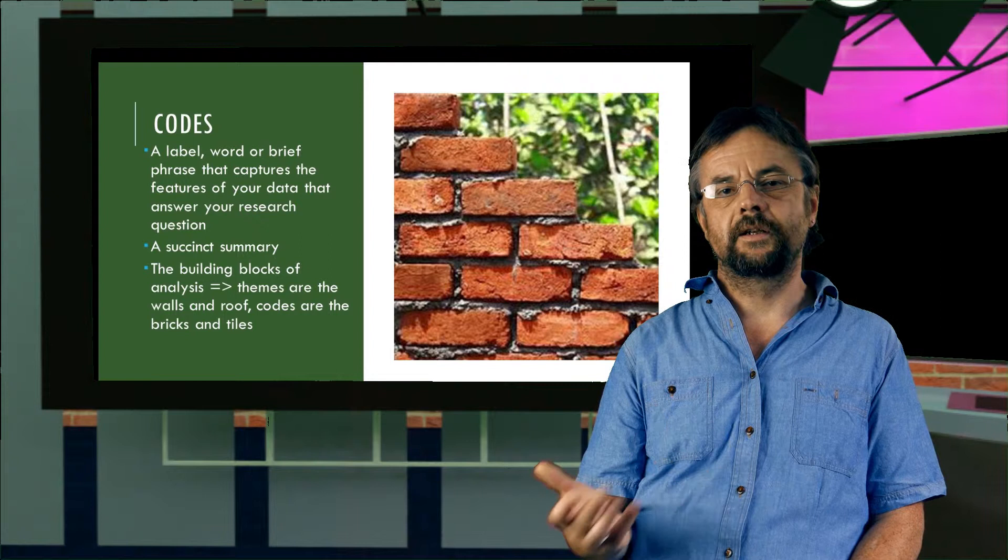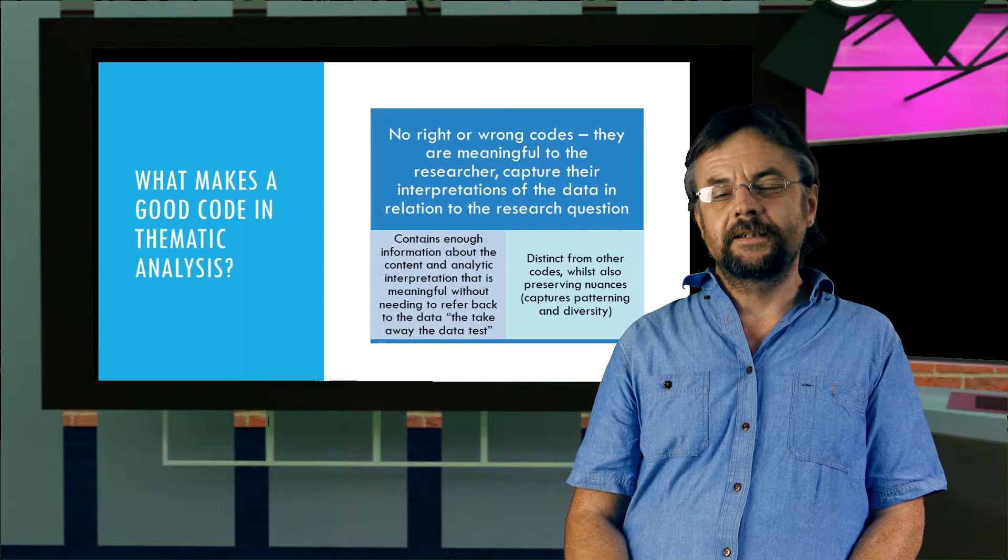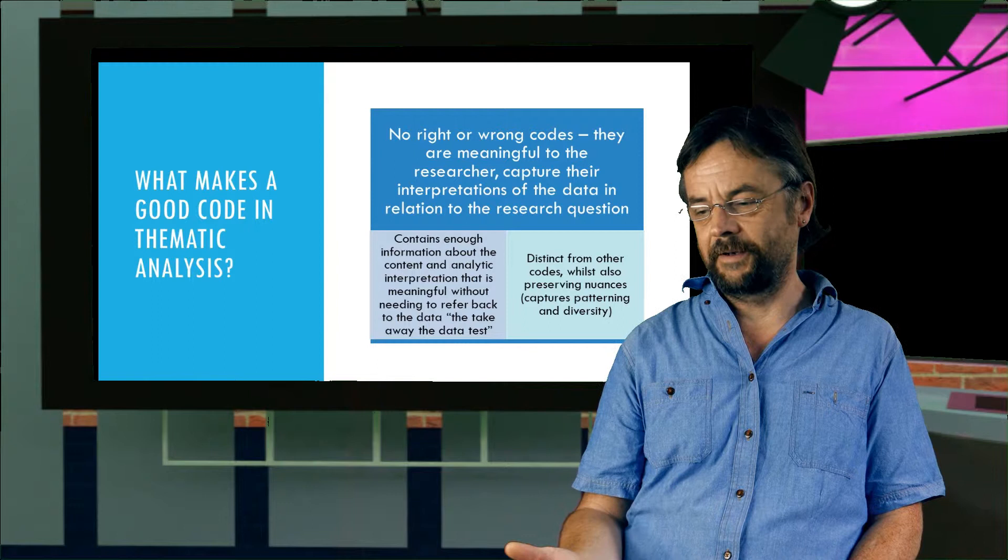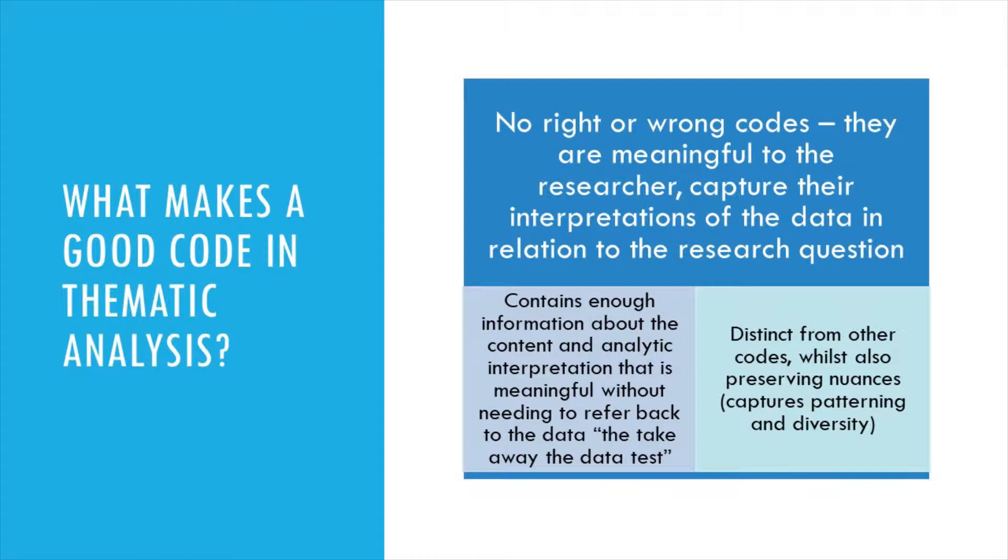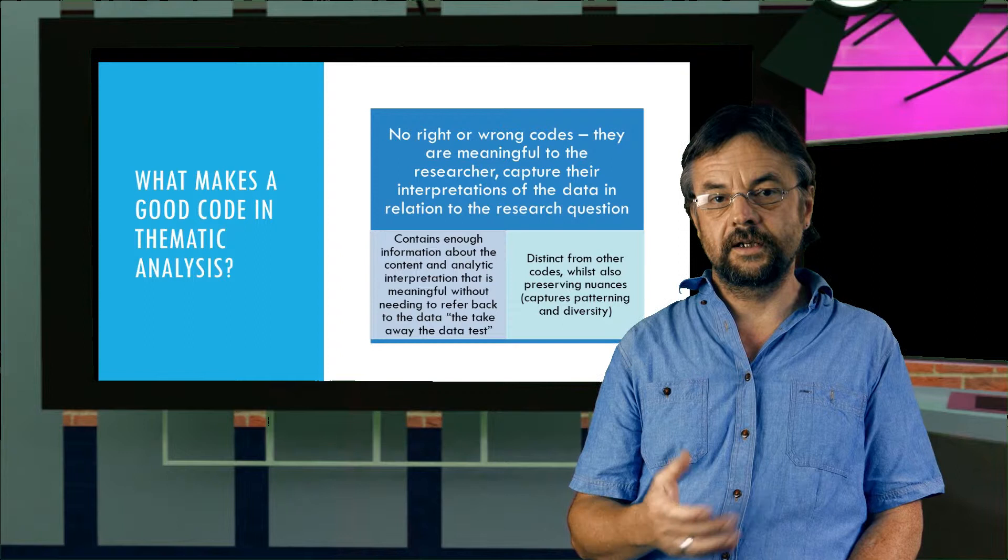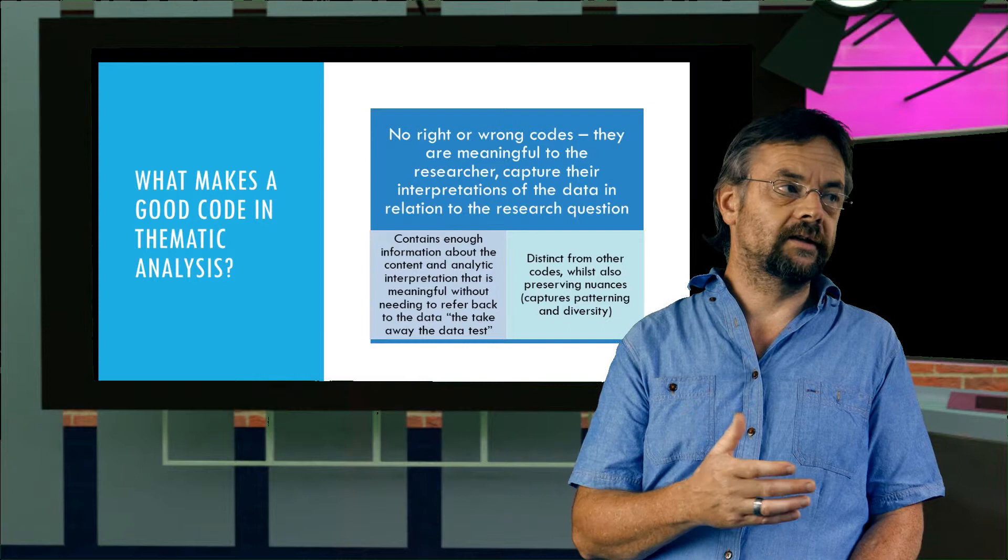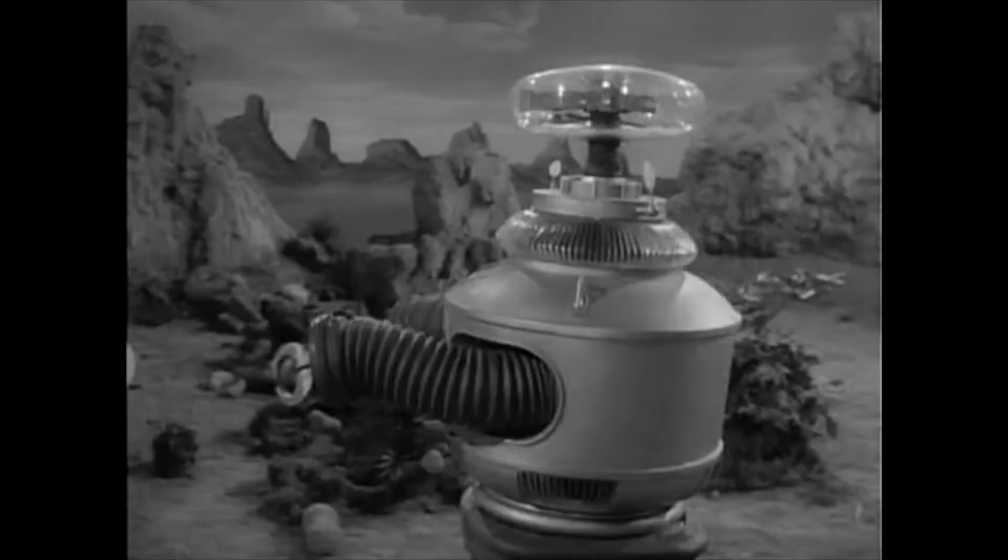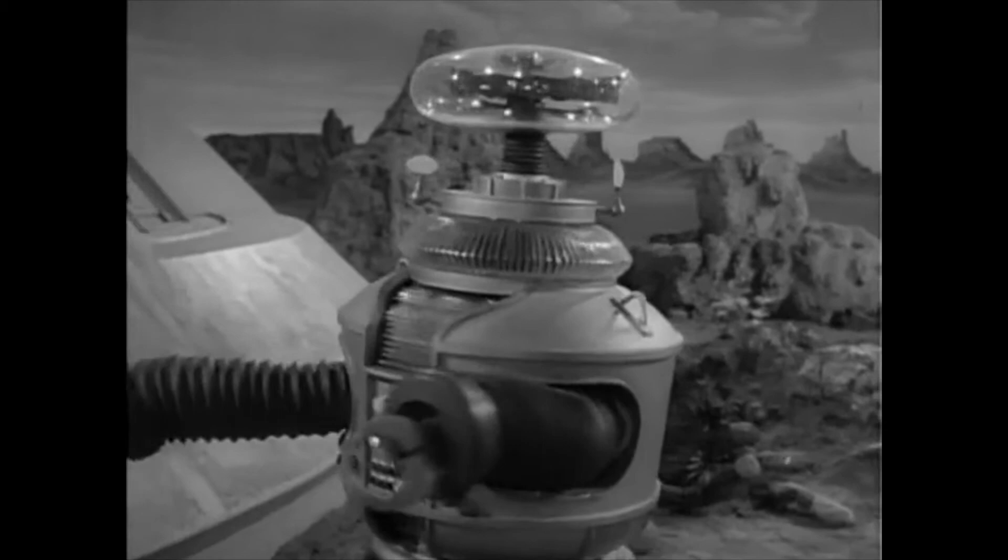So what is a good code in thematic analysis? Well, it's not an easy question to answer. There are no right or wrongs in qualitative paradigm because there's no objective truth. But there are some ways that are more useful than others. So codes that contain enough information about the content are good codes, ones that are self-explanatory. So take your data away, take your transcripts away, read your codes. And if you know what the data is from the code, it's a good code. If your code is, for example, lifestyle behavior, that might be too general. You might not get a sense of what that data was actually telling you.